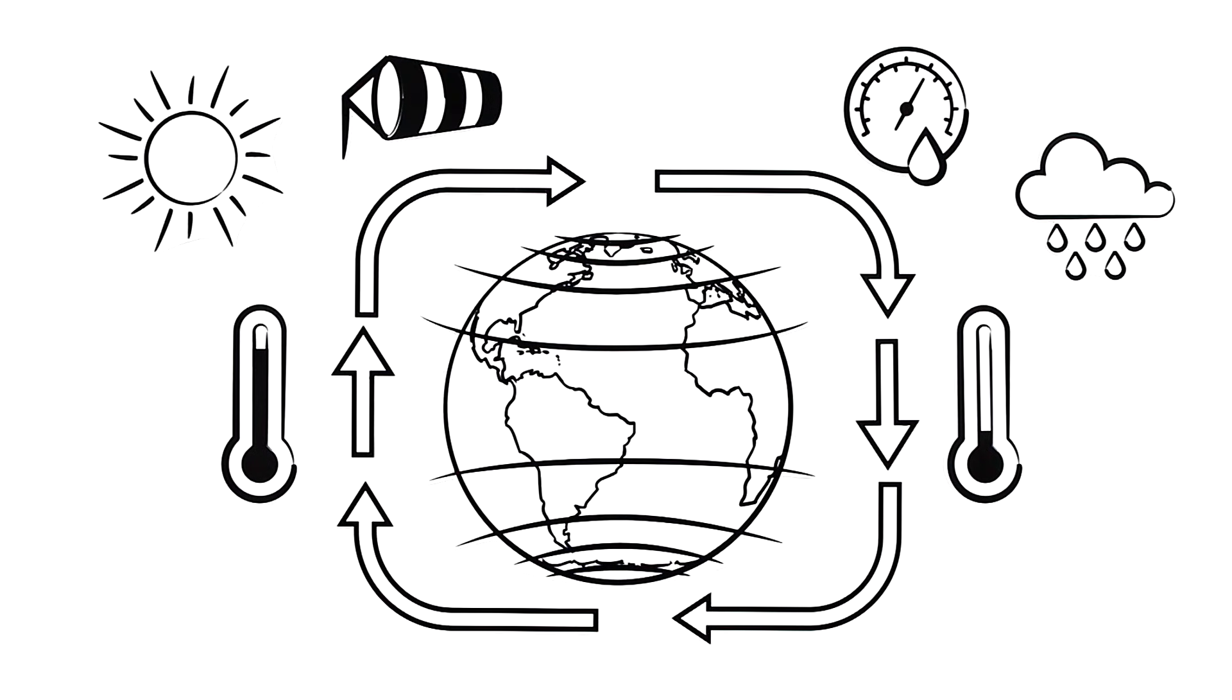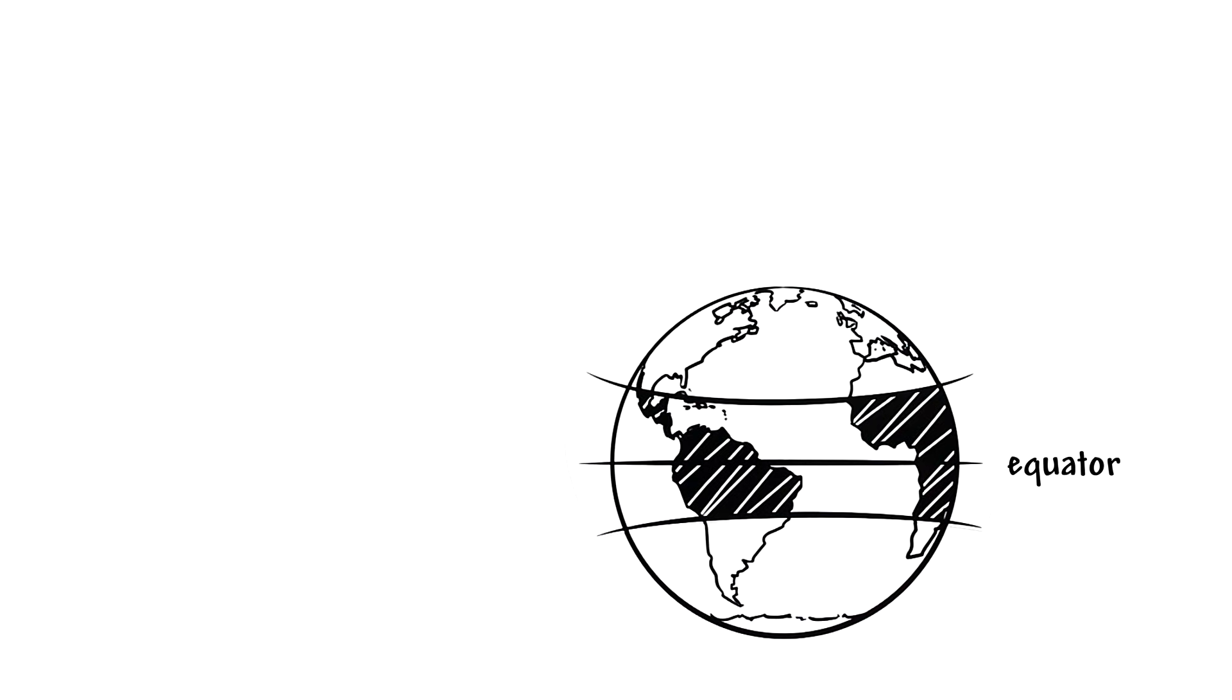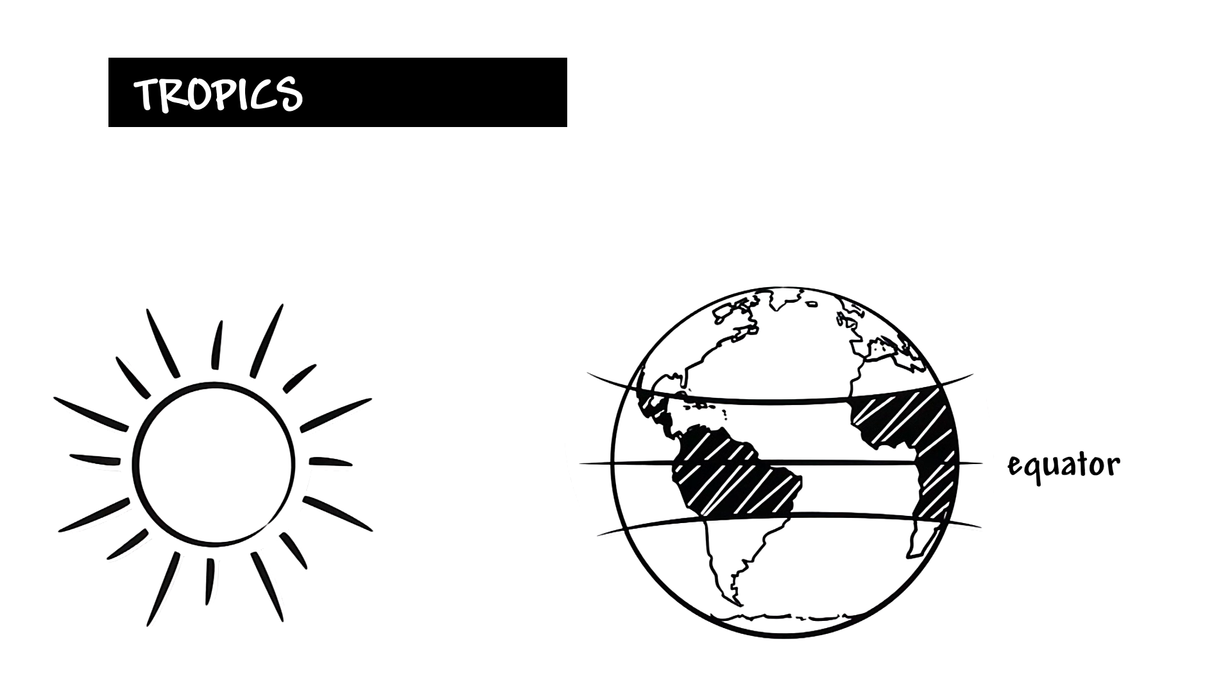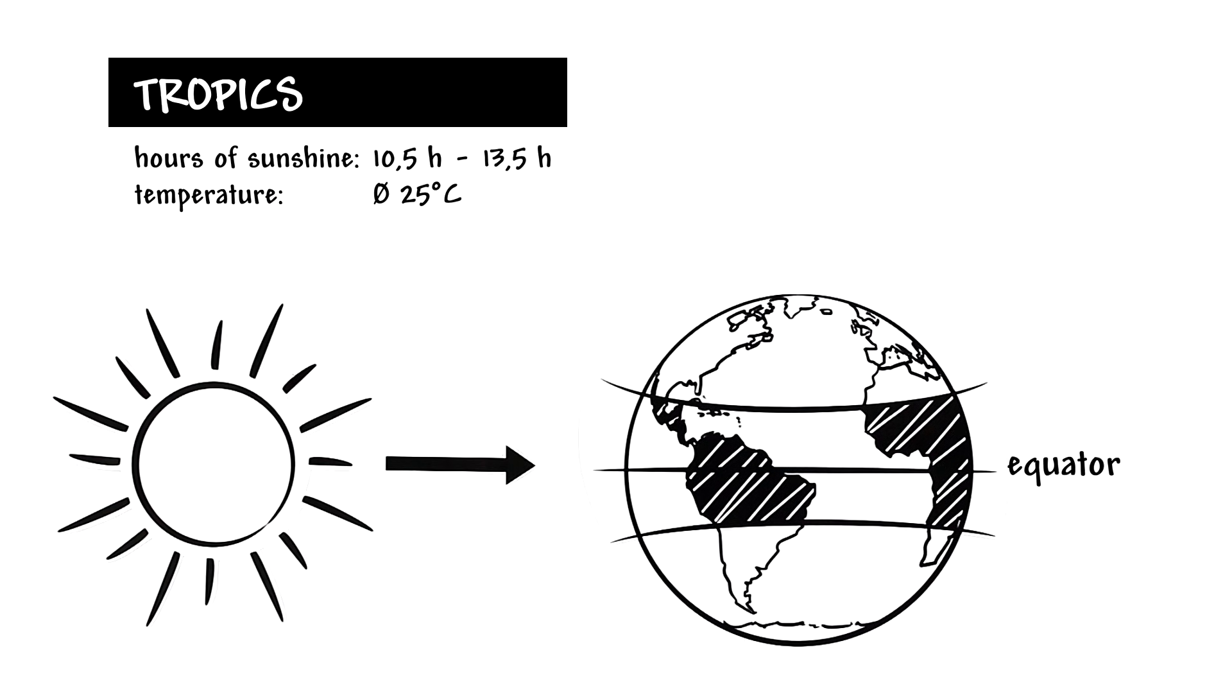All this contributes to climate distribution. There is a line around the center of our globe called the equator. The regions surrounding this line are the tropics. Since the sun's rays hit the Earth here almost straight on all year round, days are basically the same length and also just as warm whatever the season.